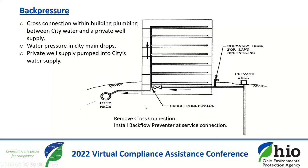This is an example of a backpressure condition. Here you have a city main supplying water to a building, but also a private well on the property supplying water for lawn irrigation. There is a cross-connection with just a shutoff valve separating the two. A backpressure condition can result if the city main's pressure drops, the private well pump overcomes the building pressure, and the private well supply backflows into the building plumbing as well as back into the public water supply. What we need is a physical separation and a backflow preventer installed at the service connection to prevent any backflow into the public water supply.